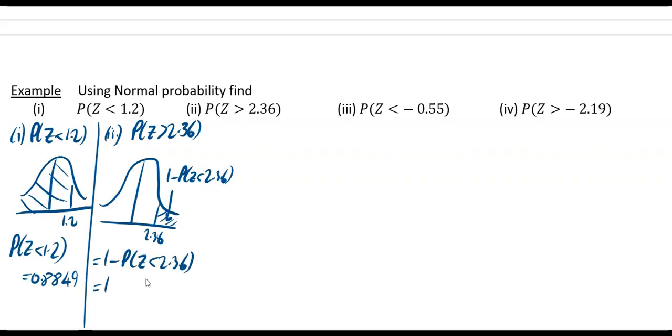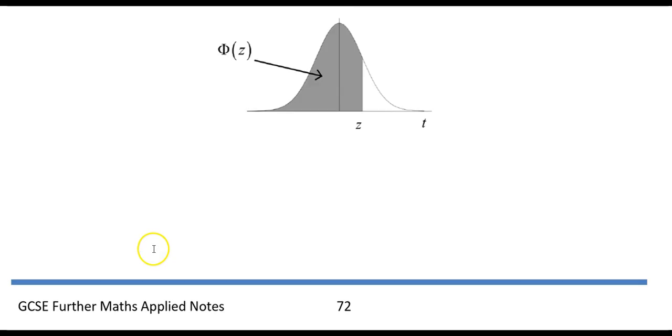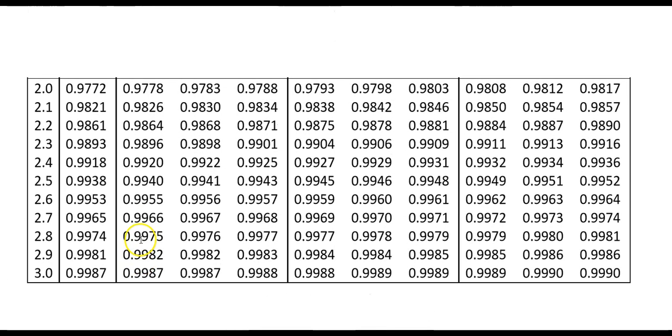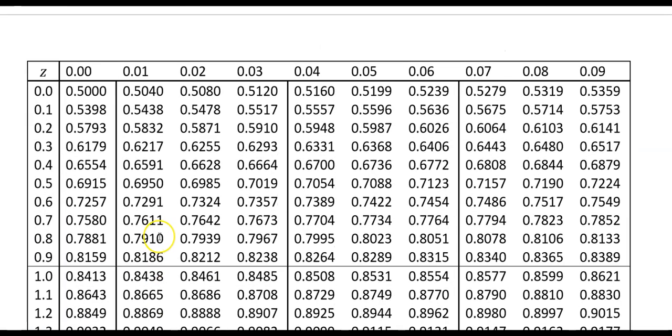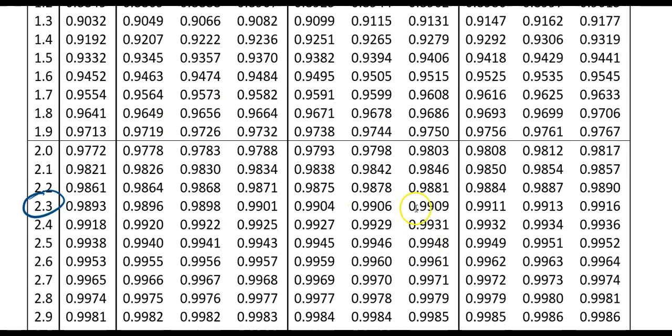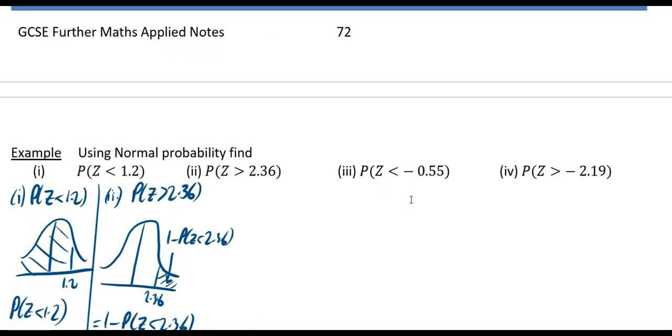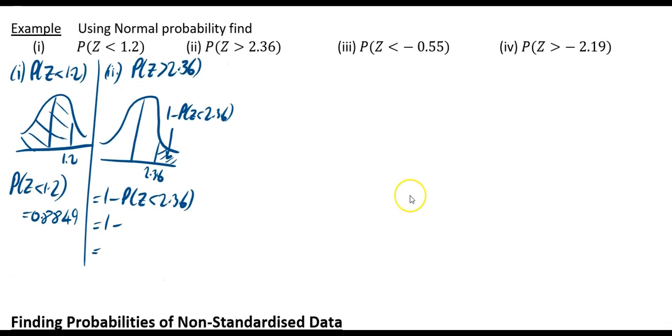We go back to our tables and find out what that is. We're looking for 2.36 in our tables. There's 2.3, and we go up to find our 0.06 column. Where these two meet, it is 0.9909. We put that in: 1 minus 0.9909 is 0.0091.